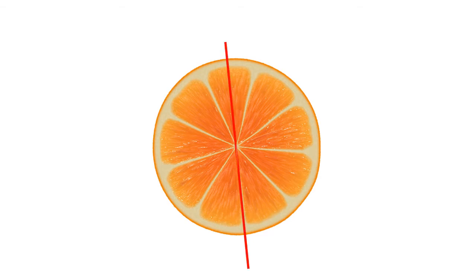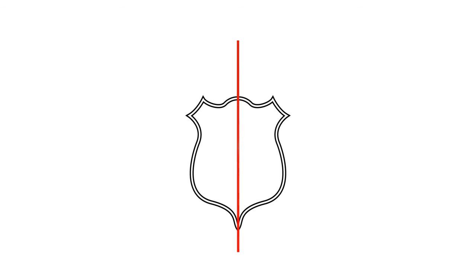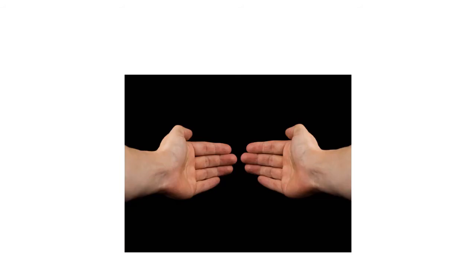The next figure is an orange sliced in half — this can also be divided into two parts with the help of a line. Our planet Earth can also be divided into two identical parts with a line. Here we are talking about the shape only, not the demography — not the land, water, or sky. In this emblem also, if we draw a vertical line, we can divide it into two parts.